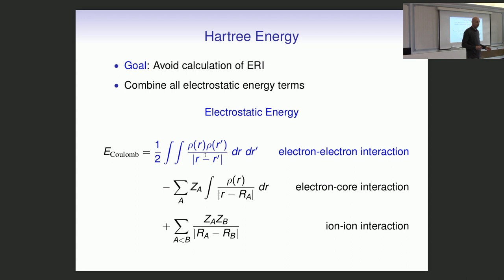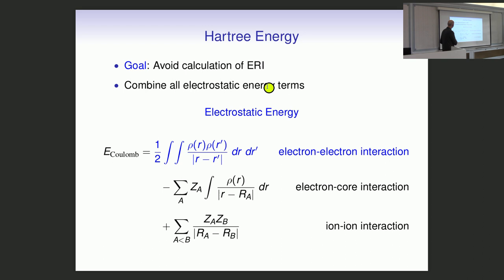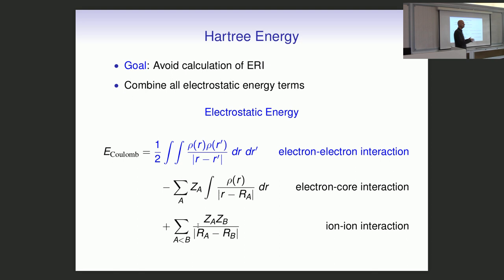The GPW method's goal is to avoid calculating these four-center two-electron integrals entirely. The approach combines all electrostatic energy terms: the Hartree term, the electron-core interaction (here written explicitly as an electron-nuclei Coulomb term), and the ion-ion interaction, which is a trivial pair potential that is now incorporated into the energy functional.